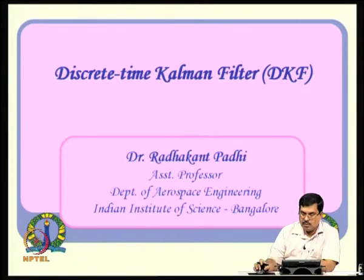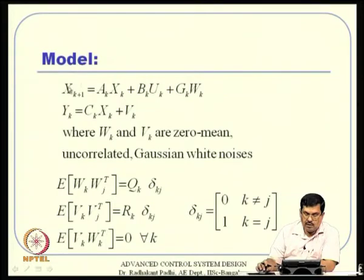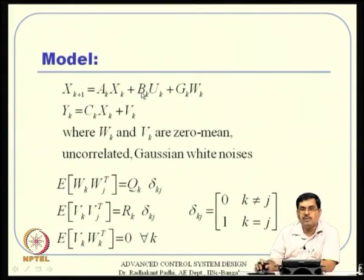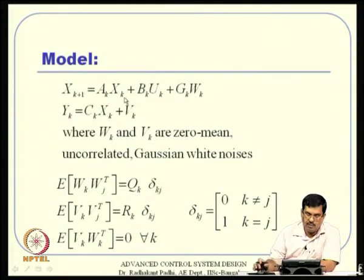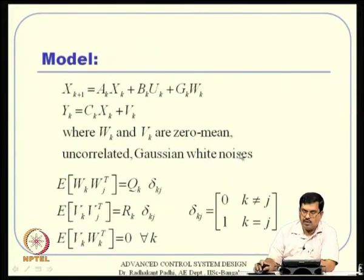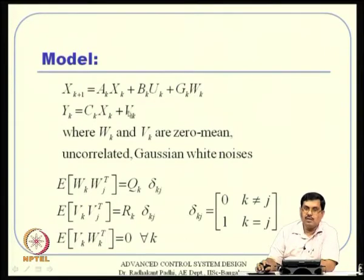For discrete-time Kalman filter, we assume a discrete-time linear system — and in discrete time it is natural to consider time-varying systems. The model is: x_{k+1} = A_k*x_k + B_k*u_k + Γ_k*w_k, and y_k = C_k*x_k + v_k, where A_k, B_k, C_k, Γ_k can be time-varying. We assume w_k and v_k are zero-mean, uncorrelated, Gaussian white noises — a standard assumption for Kalman filter theory.